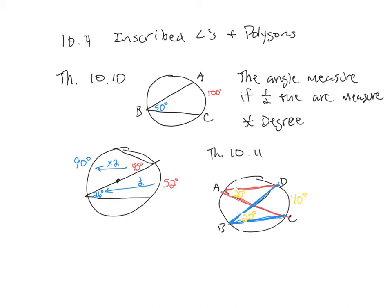The key is: the angle is half the arc. The angles are congruent when they go to the same arc, but it's because both are half that arc. This incorporates Theorem 10.10 with two more theorems.